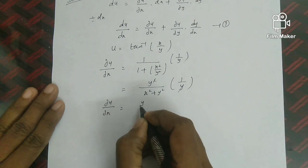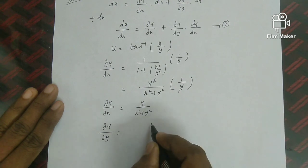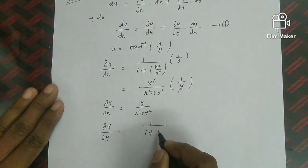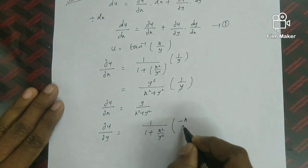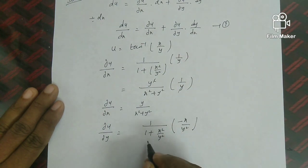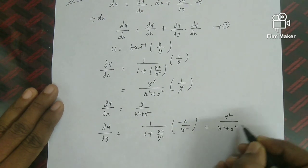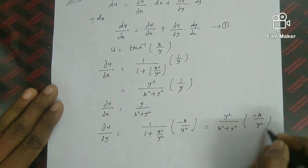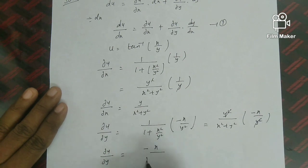For ∂u/∂y: differentiating tan⁻¹(x/y) with respect to y gives 1/(1 + x²/y²) · (−x/y²). Applying LCM gives y²/(x² + y²) · (−x/y²) = −x/(x² + y²). So ∂u/∂y = −x/(x² + y²).